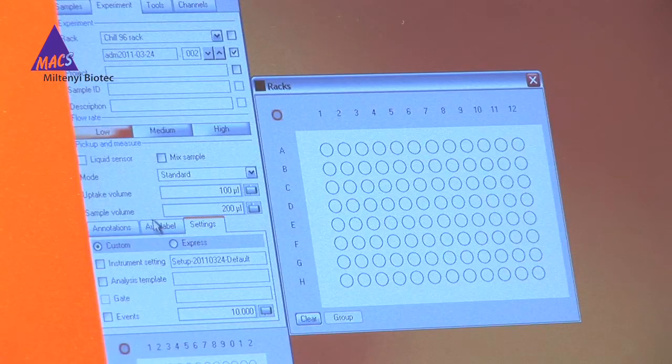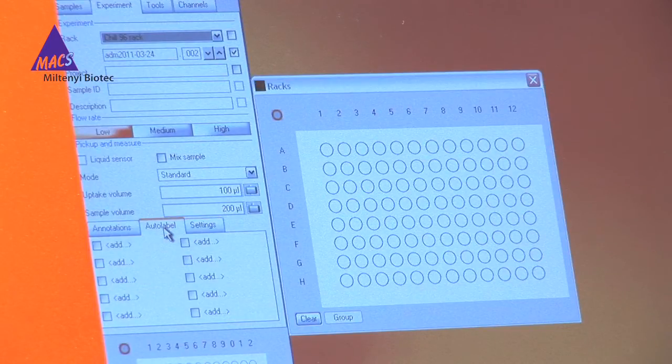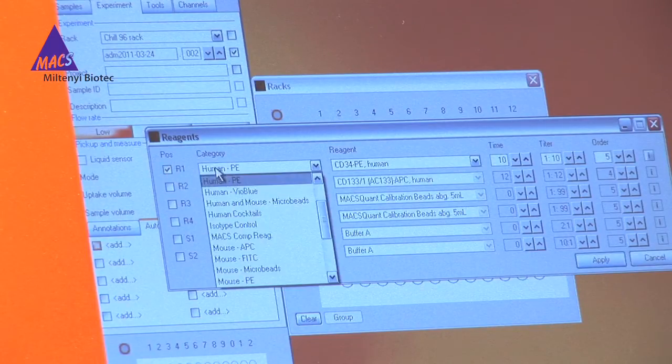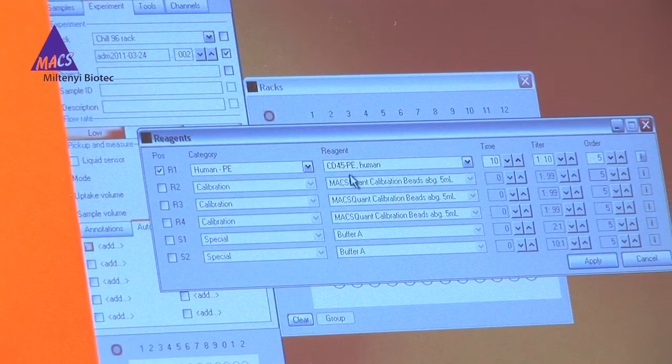Next, go to the Auto-label tab and click on Add to open the reagent manager. For each reagent, select the position, category, and reagent.